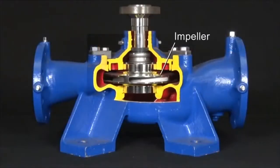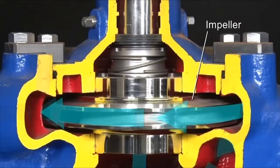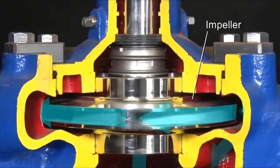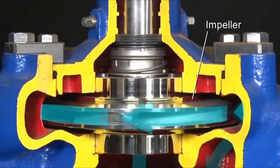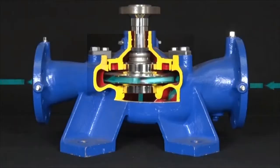Rotation of the impeller creates a vacuum at the center of the impeller, allowing the liquid to be drawn in through the pump inlet. Given pressure and velocity energy by centrifugal force, the liquid is pushed out through the outlet. Such repetition of suction and expulsion allows the liquid to be pumped.